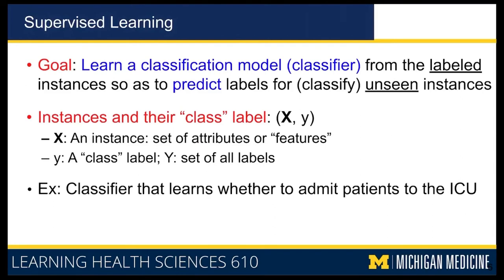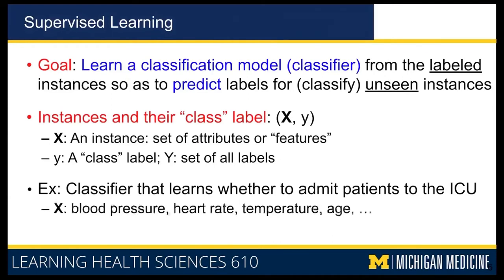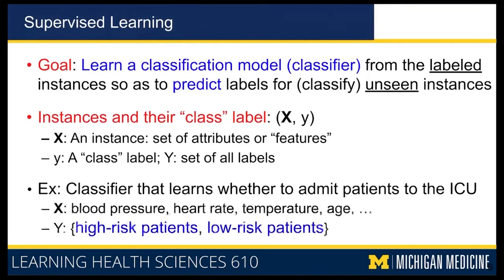For example, on the task of whether you should admit a patient into the ICU, X is all the features collected from the patient — blood pressure, heart rate, temperature, age, and so on. Capital Y, the set of all possible options, has two elements: the label of high-risk patient or low-risk patient. For each instance, you collect these features represented by X and assign one of the two labels.